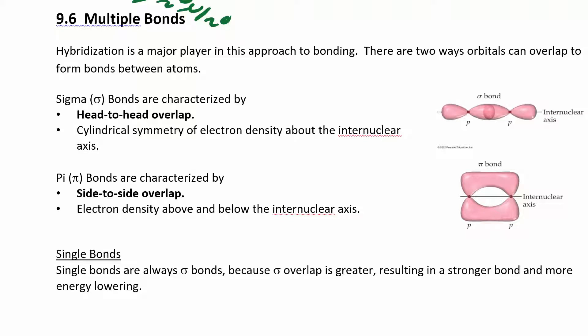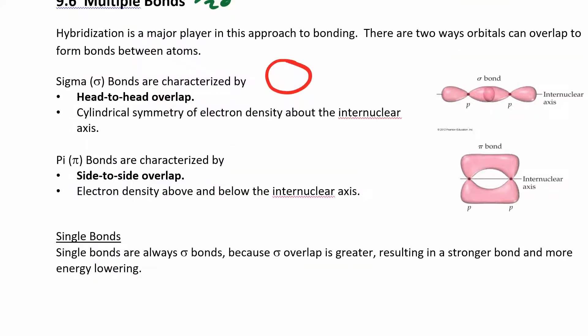There are two main ways that orbitals can overlap. Head-to-head overlap is called a sigma bond — and yes, it is Greek. Side-to-side overlap is called a pi bond. S orbitals can only overlap in a sigma bond. Every single bond — not a double or triple — is a sigma overlap. So anytime two s orbitals overlap, that's a single bond and a sigma bond.